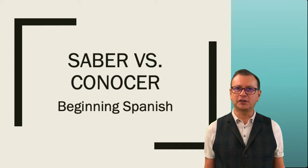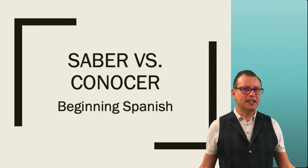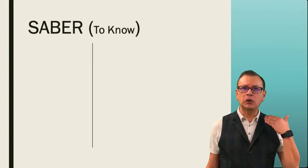Are you ready for those? Let's take a look. Let's start with the beginning. How do you conjugate the verb saber? Very irregular verb. This is the verb to know something. Take a look.